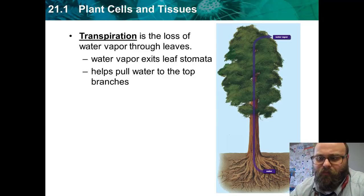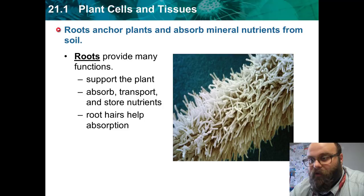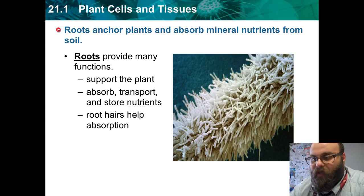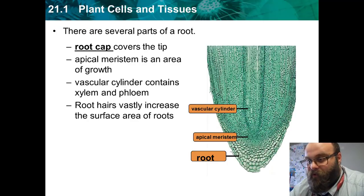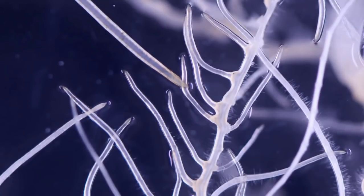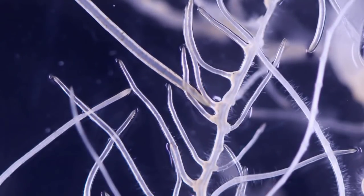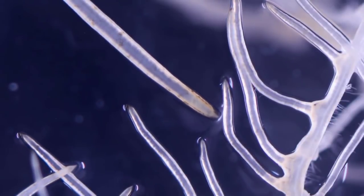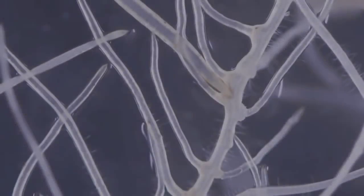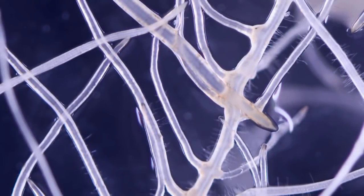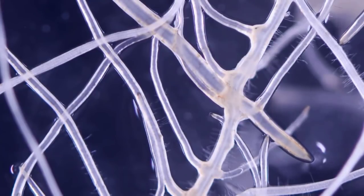Roots are another plant part. They have many functions — mainly structural, helping keep plants anchored in the ground — and they absorb, transport, and store nutrients like water, phosphorus, nitrogen, and carbon from the soil. Roots have tiny hairs at the end of them that increase the root's surface area, allowing plants to absorb far more. Here is a microscopic image of a root — if you zoom in you can see tons of tiny hair-like fibers growing off of these roots.